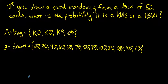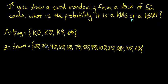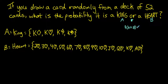Let's look at another problem. If you draw a card randomly from a deck of 52 cards, what is the probability it is a king or a heart? This is an 'or' question, so we want the probability of drawing a king (set A) or a heart (set B): P(A or B) = P(A) + P(B) − P(A and B).